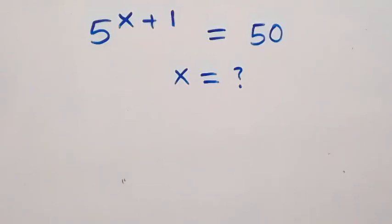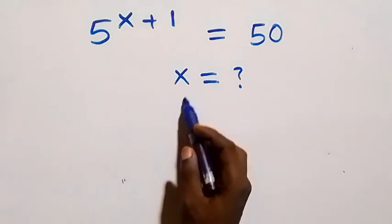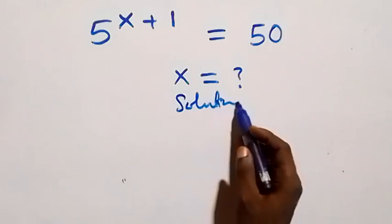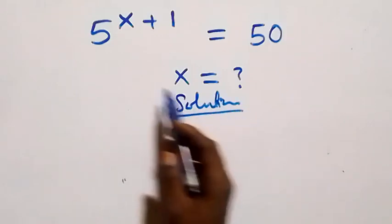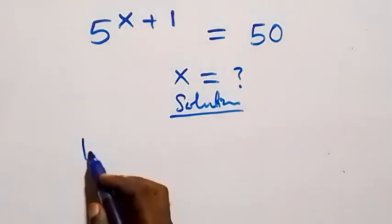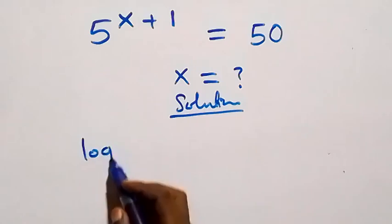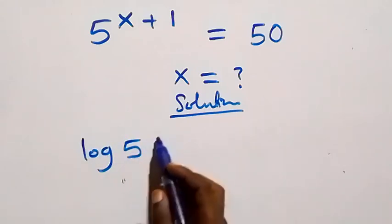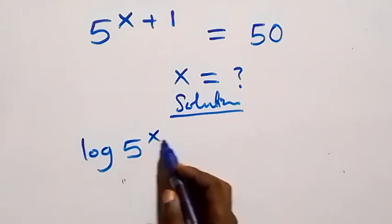Hello, you're welcome. Now here, how should we solve this problem? Should we take the log on both sides, or should we first break this down? Let's take the log on both sides directly. We have log of 5 raised to the power x plus one equals log 50.